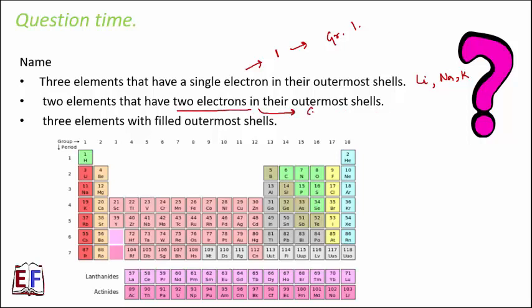Name two elements that have two electrons in their outermost shell. Two electrons in the outermost shell means these elements belong to group 2. From group 2 you can pick any two elements — it could be beryllium and magnesium.